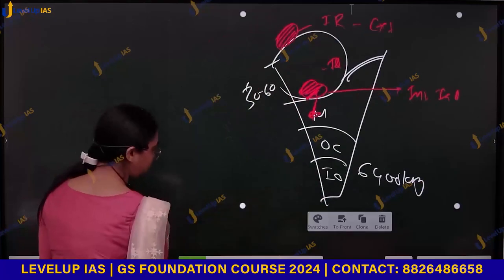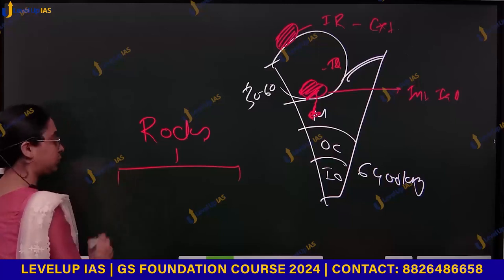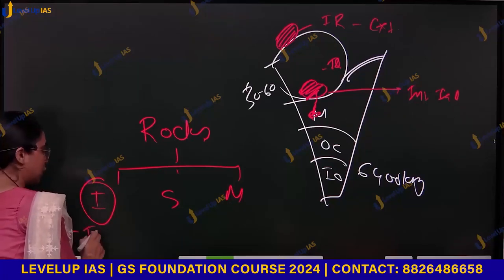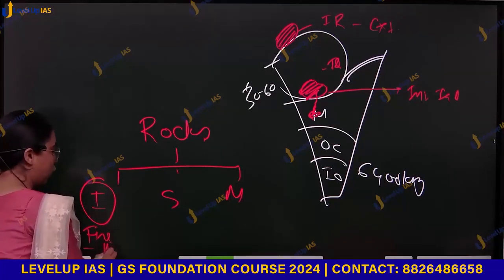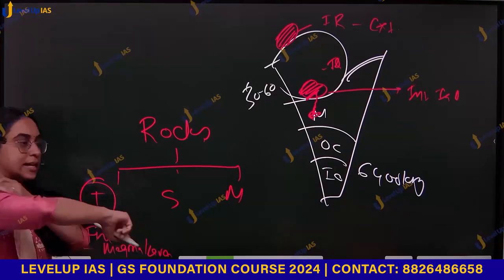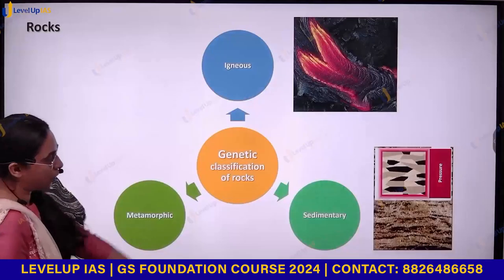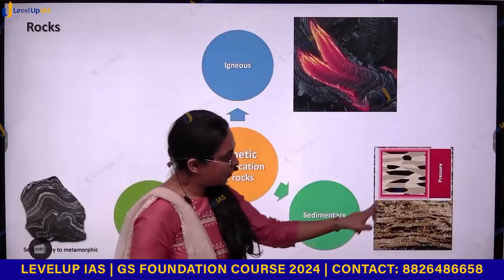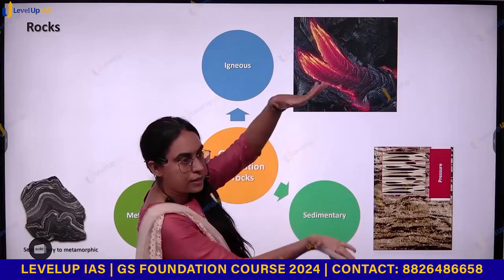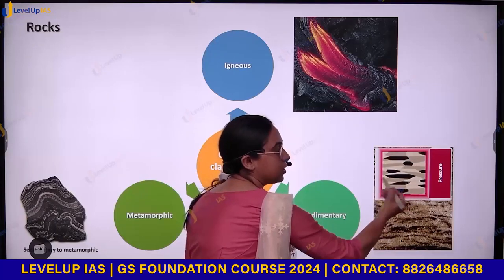Rocks on the basis of formation are of three types: igneous, sedimentary, and metamorphic. Igneous rocks are formed because of the solidification and cooling of magma or lava. Sedimentary rocks are formed because of sediments coming together. As the sediments come together, they are layered and under pressure they can solidify into various layers.